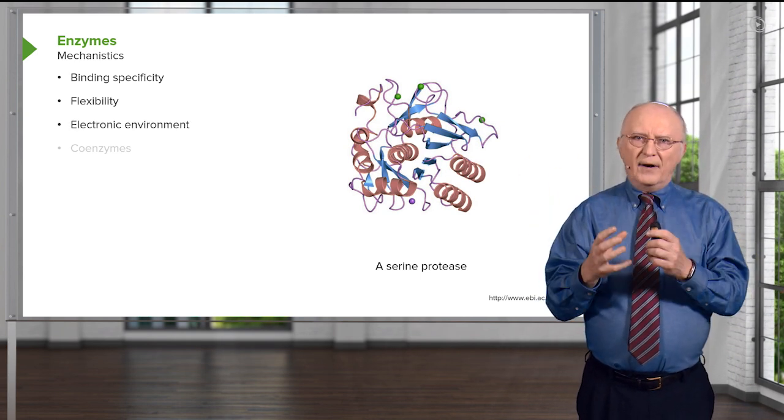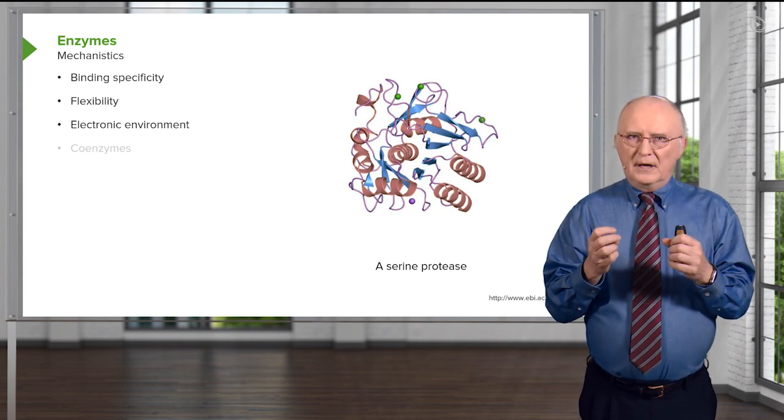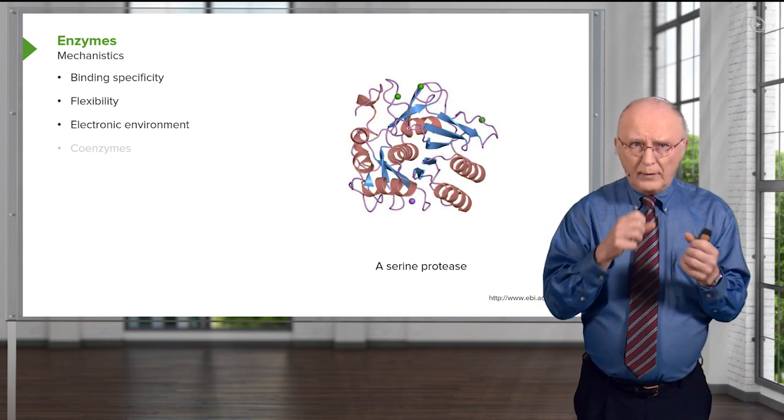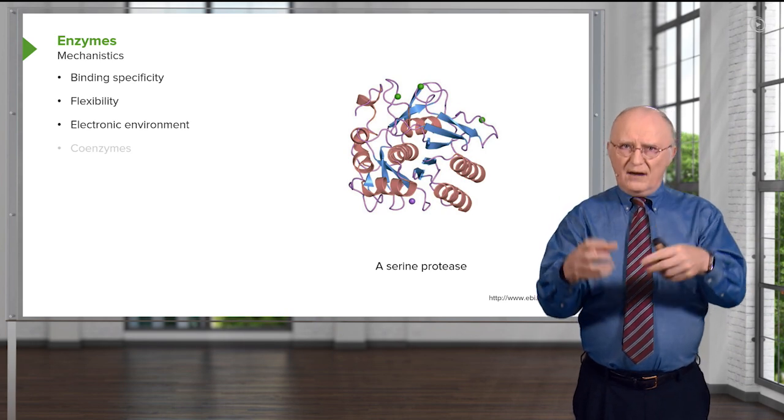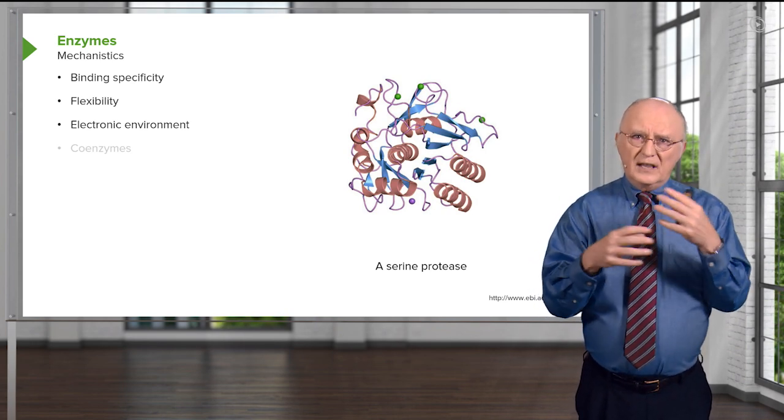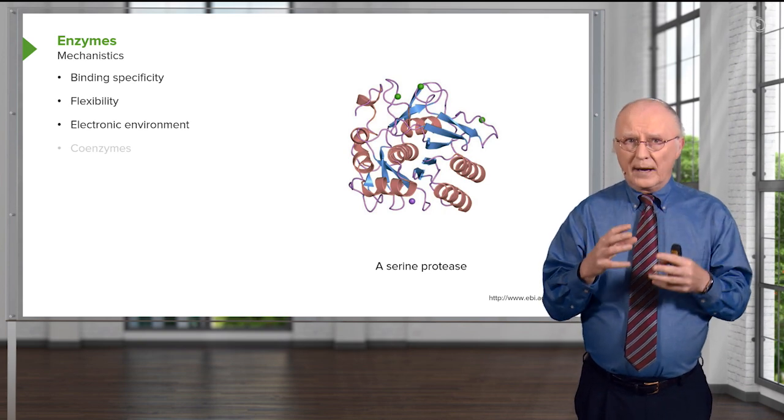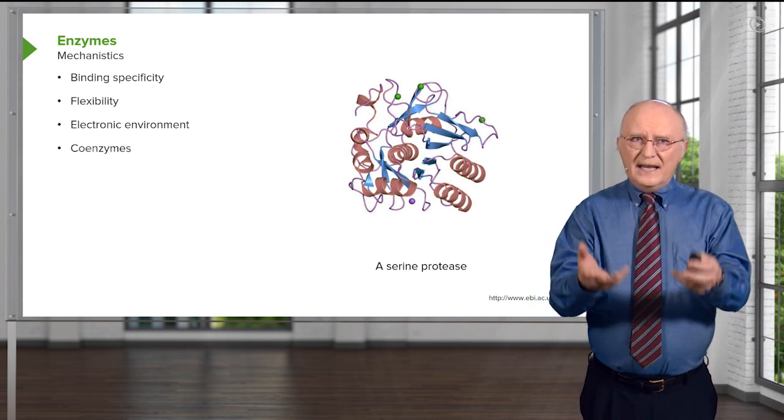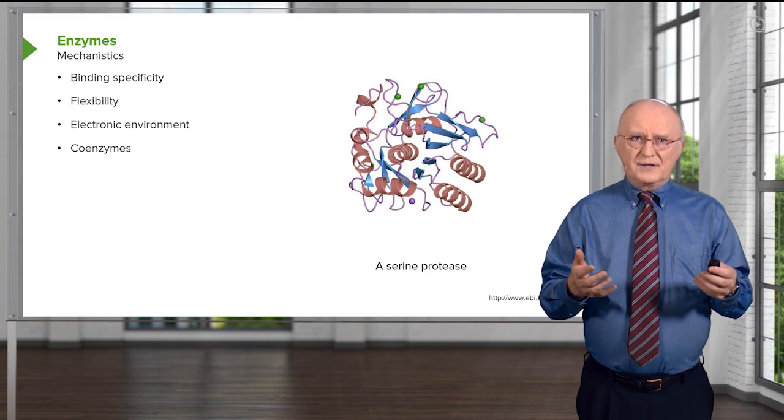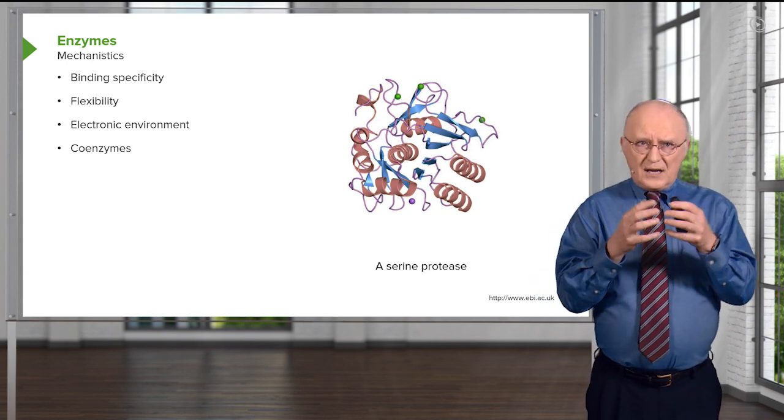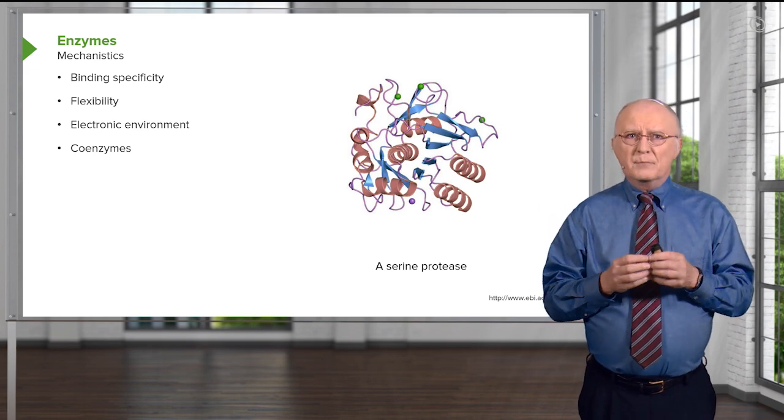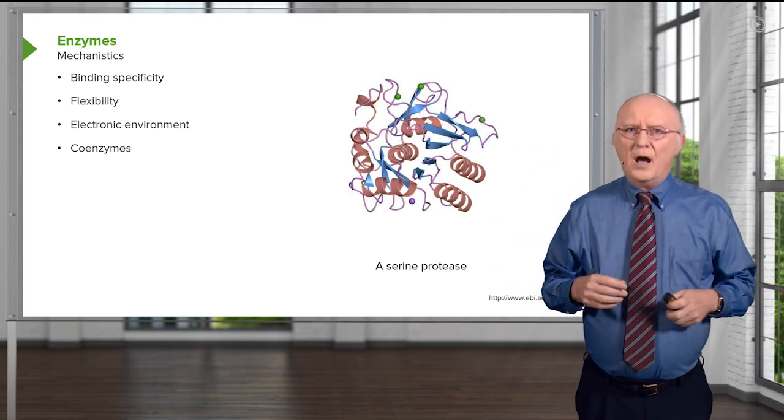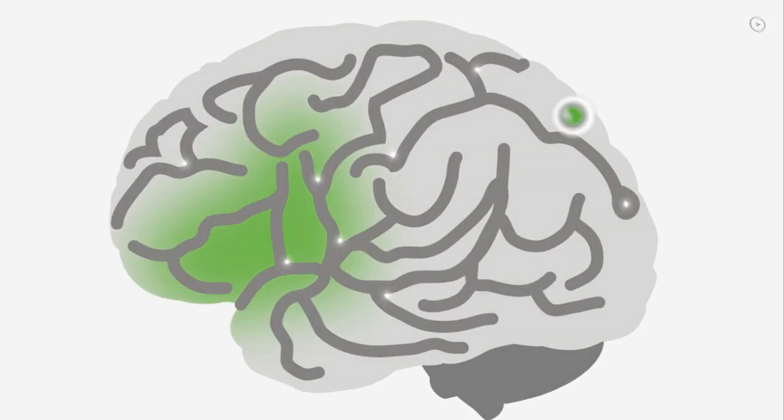The electronic environment is very critical for a reaction. In a chemical reaction, electrons are being manipulated. Electrons are being moved around. And to be able to do that, one must have the environment for those electrons to readily be able to move around. And we'll see that happening in the active site of the serine protease. Enzymes also use coenzymes. Now, in this reaction, in this example I'm going to give, I won't show a coenzyme. But I will say that coenzymes actually help an enzyme to accomplish what it accomplishes.